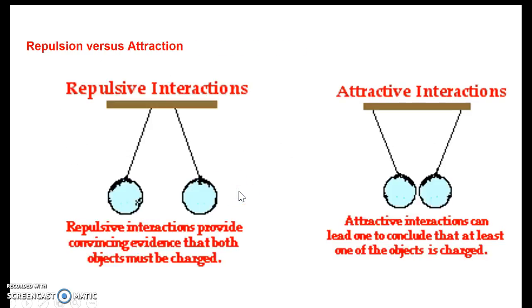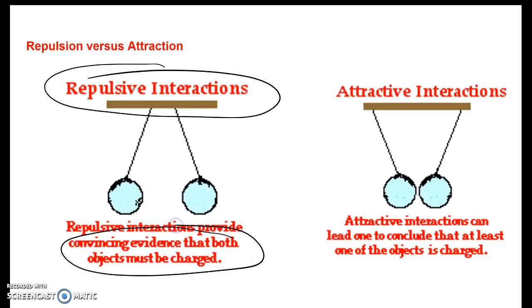So let's talk about repulsive versus attraction. If we see something that's a repulsive interaction, where things repel, means like charges. But if there's a repulsion, that means both objects must be charged. So either they're both positive or they're both negative. They're both negative, they're going opposite directions. Both positive go in opposite directions because like repel.